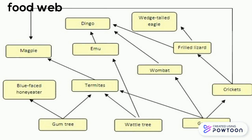My food web shows that whichever arrow is getting pointed at is what is eating it. For example, the grass is the producer which is eaten by the Wombat. The Wombat is the primary consumer which is eaten by the Dingo. And the Dingo is the secondary consumer which is the top for that bit.